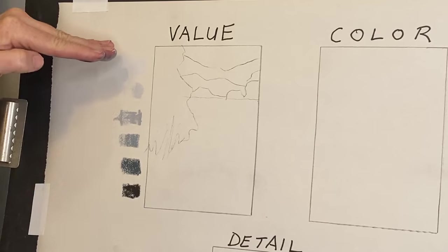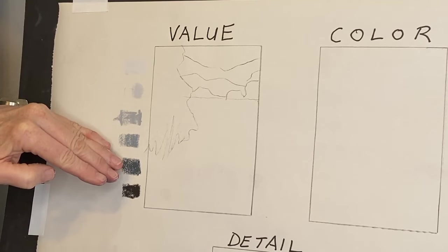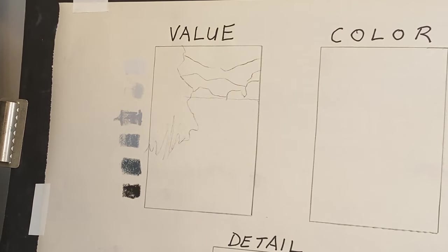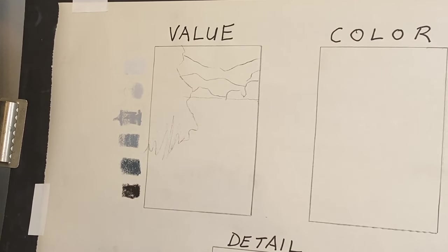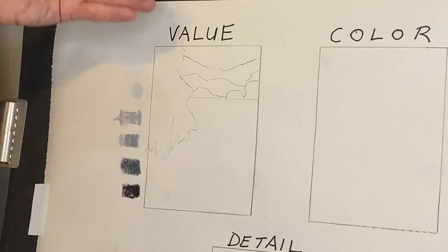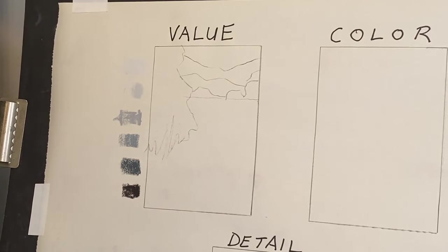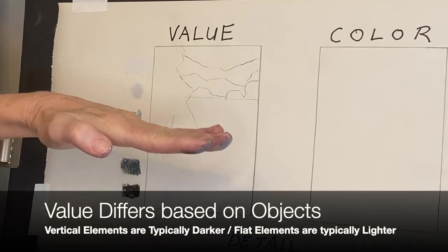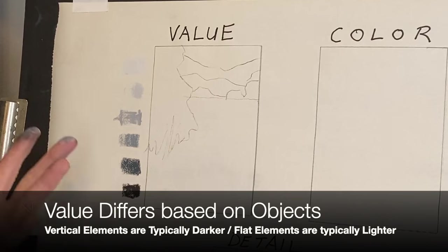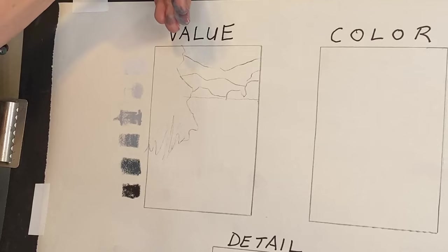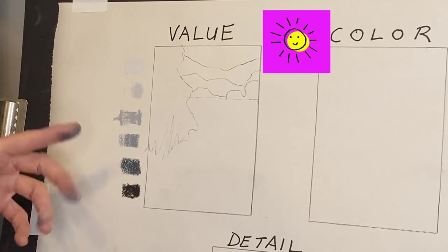With this general value scale in mind, things get lighter in the distance. We also need to consider the object we're painting. As a rule of thumb, things that are vertical — like a tree or a mountain — will have a darker value, and things on a flatter plane will have a lighter value. This is because of the way the sun shines down: it reflects off flat planes but not so much off vertical structures.